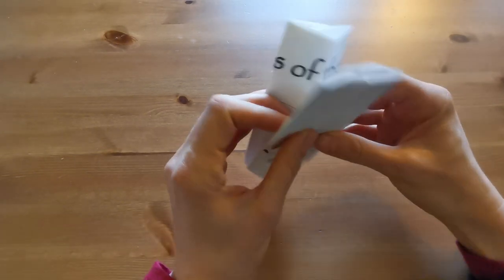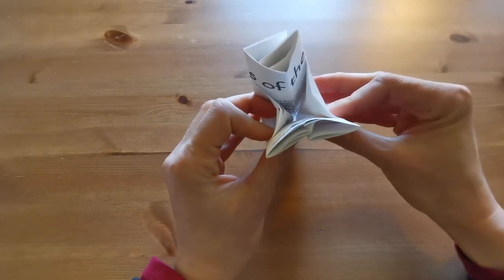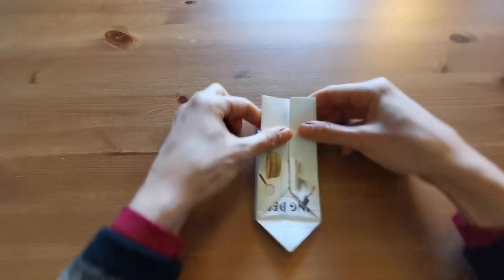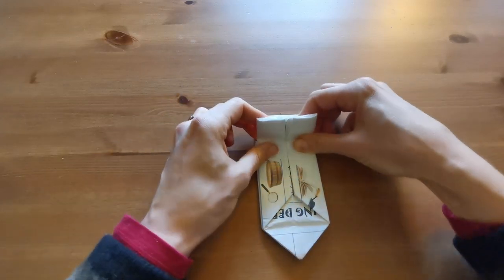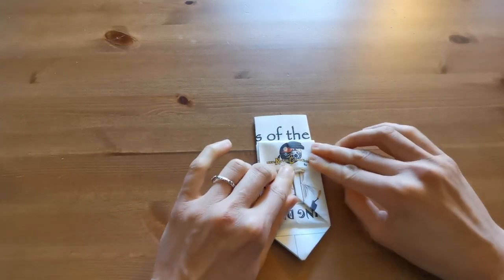Another optional fold that can help is taking what we call the wings on the top and folding them over the sides of the pot. This fold helps keep the pot together when you go to open it.